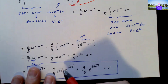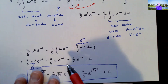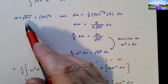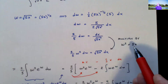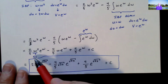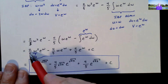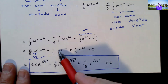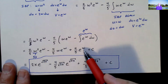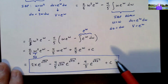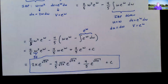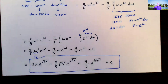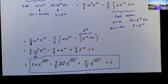Now I go back to the original variable. Recall w equals the square root of 5x, and w squared equals 5x. Where I see w squared I replace it with 5x — two-fifths times five gives two, so that term becomes 2x e to the square root of 5x. Everywhere I see a w I replace it with the square root of 5x. That gives us our final antiderivative — a very clever technique: use substitution first so that integration by parts becomes applicable.